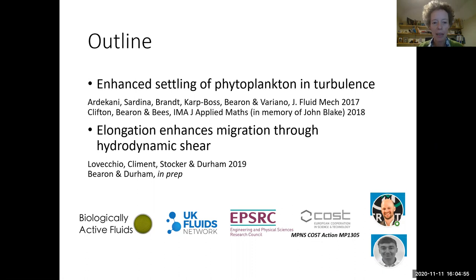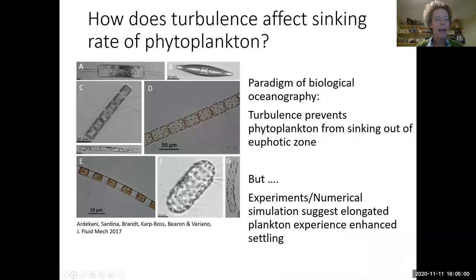The first problem is thinking about phytoplankton sinking in turbulence. Here are some images of mostly diatom chains — single cells that can form chains, sink through the water column, and are slightly heavier than the fluid.